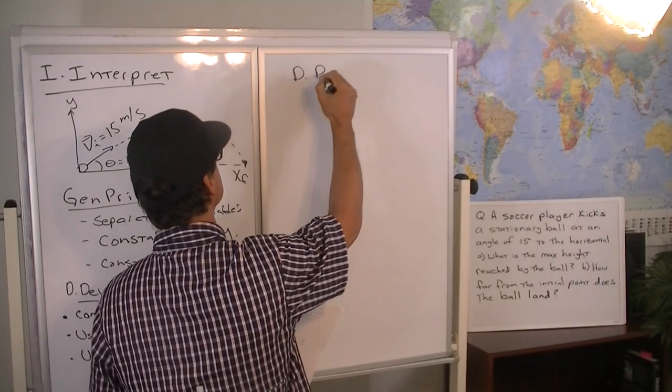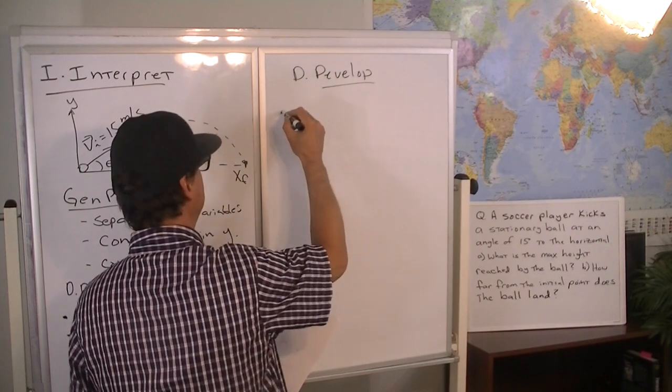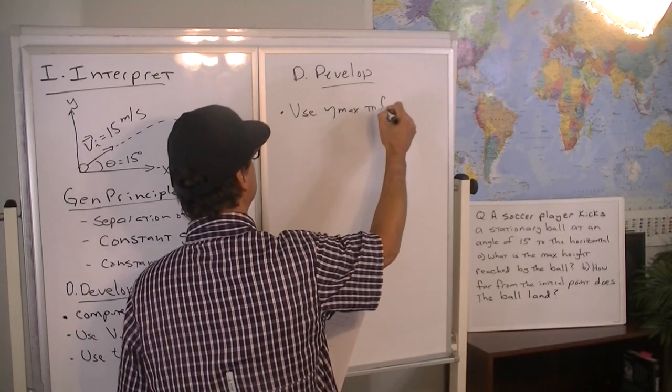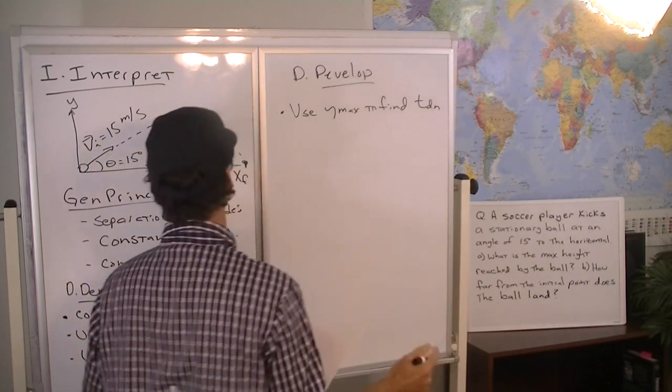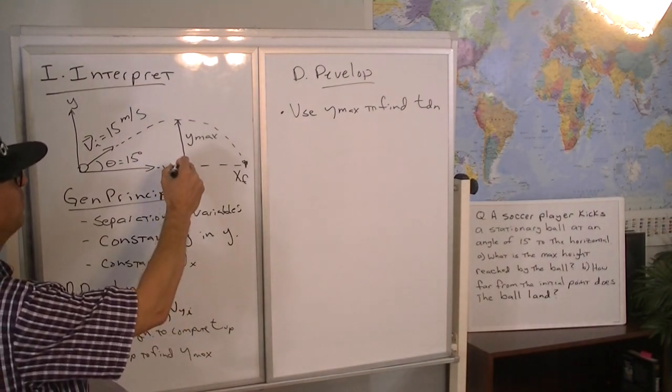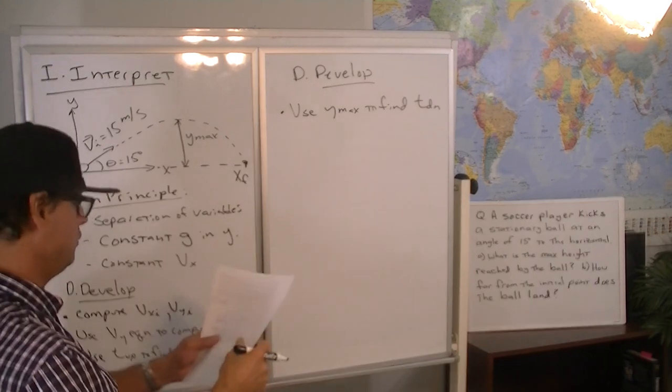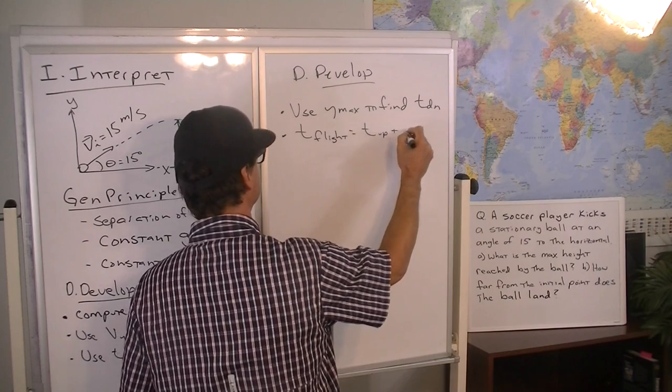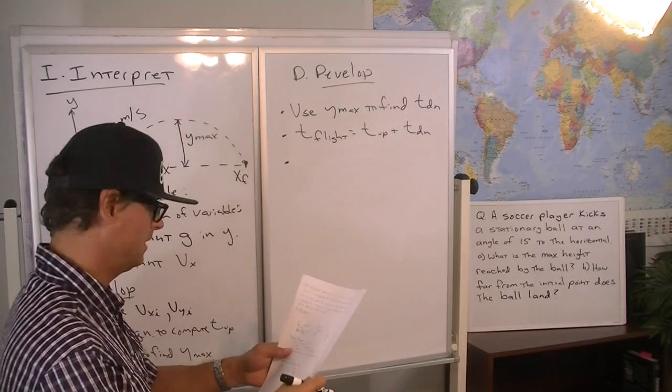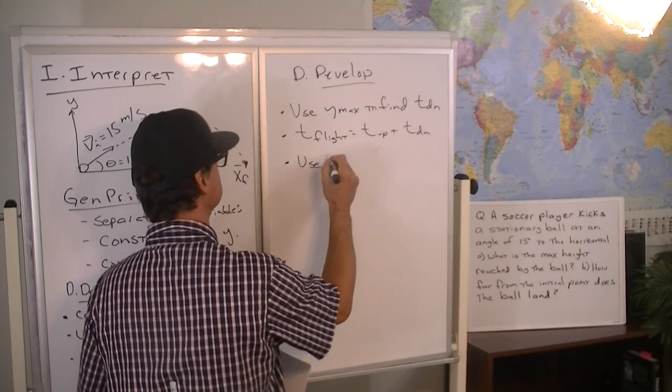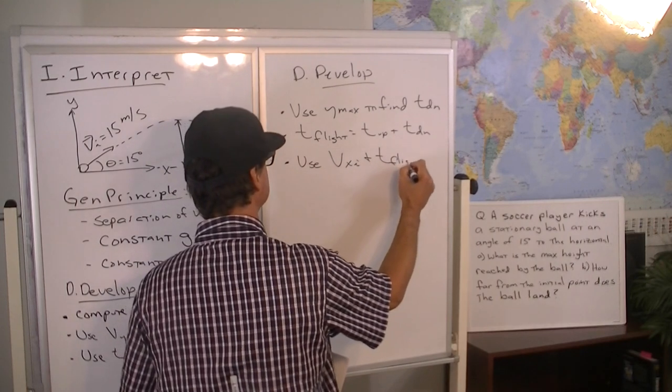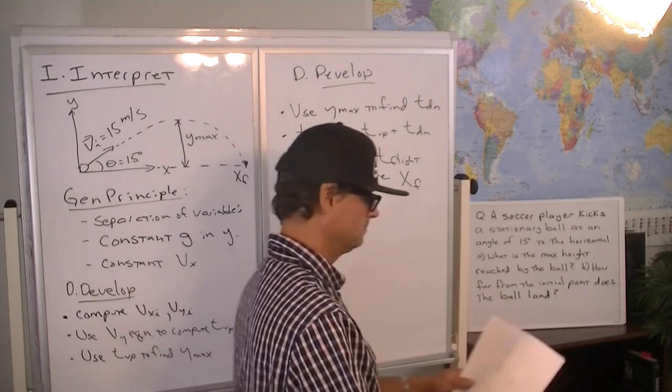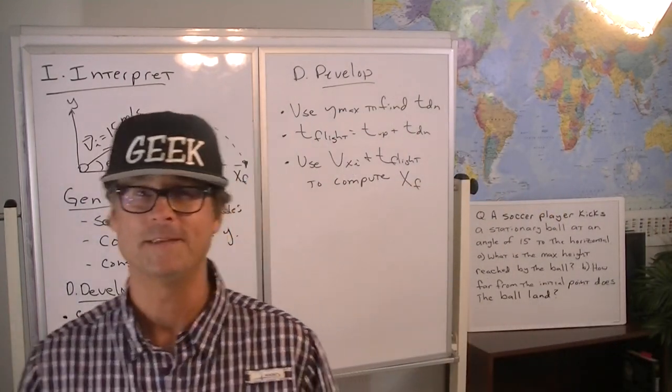So now, we're still developing here. We need to finish the problem and find the height. So then we're going to use Y max to find, I'm going to call it T down, because the ball, really, its motion can be connected into two different phases as far as its vertical motion goes. It's coming up, and then it's coming down. So, use Y max to find T down, then the total flight time is equal to T up plus T down. And then finally, we can use VX initial and T flight to compute X final. Now, that's a lot of moving parts, but we've got it all mapped out. We're thinking about it carefully. So let's just go ahead now and execute our plan or evaluate.